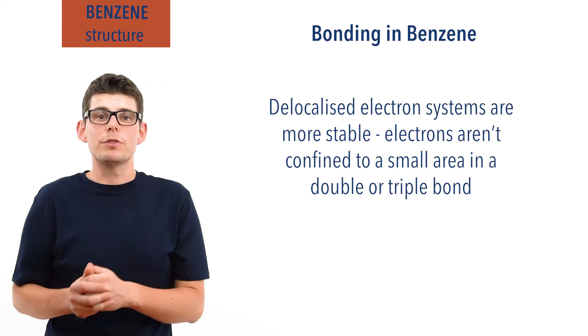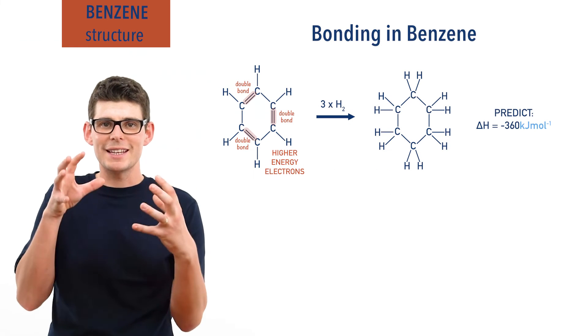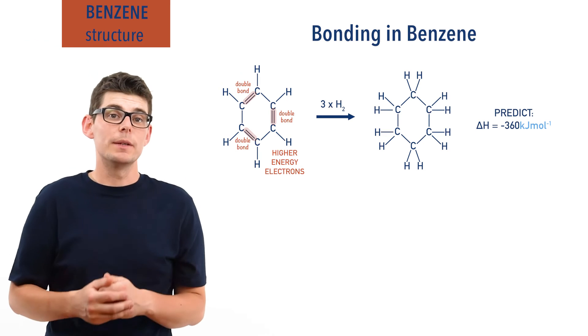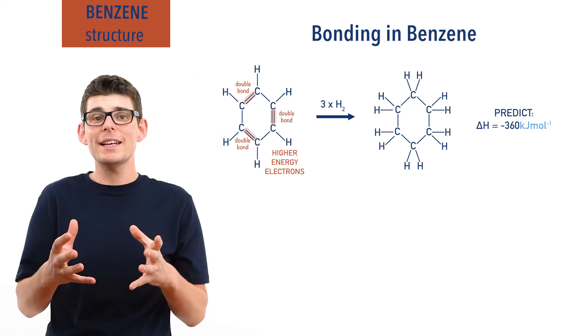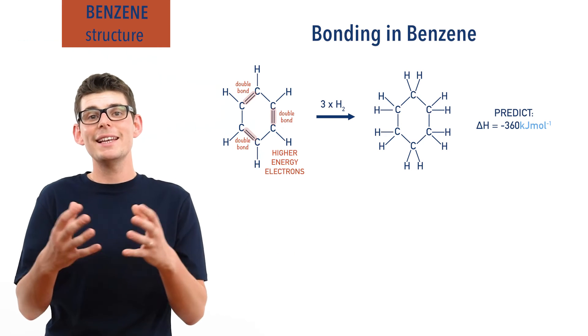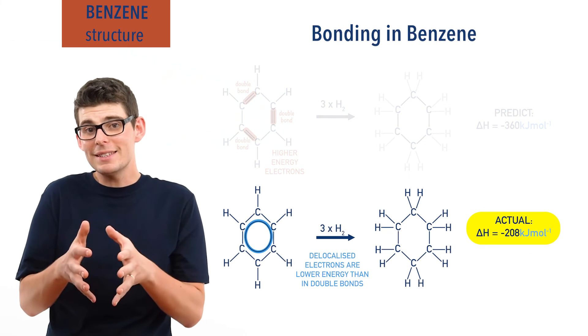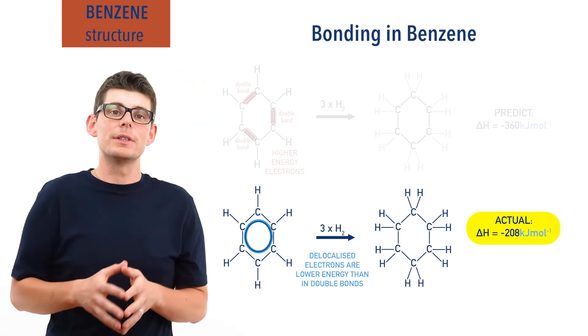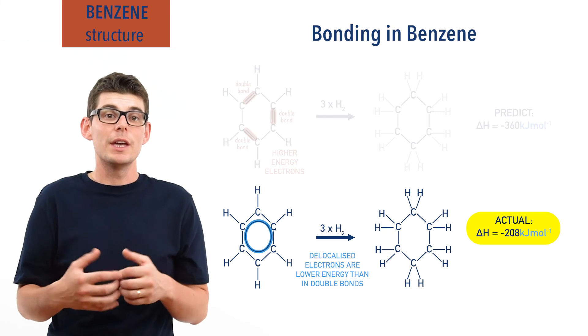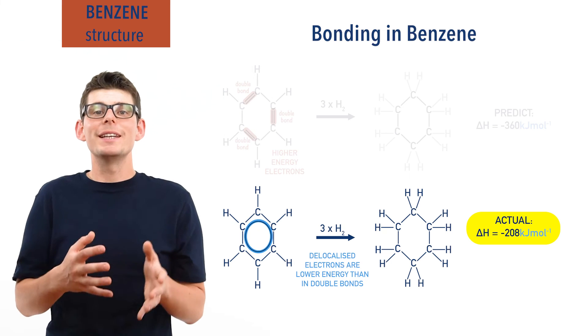For the Kekulé structure, there are three double bonds, each with electrons forced to stay in a confined area, making them higher energy. When the Kekulé structure is theoretically hydrogenated, these double bonds break and the electrons release some of that energy. In benzene, the electrons involved in the pi bonding system are at a lower energy and more stable in the first place, meaning when hydrogenated they release less energy.